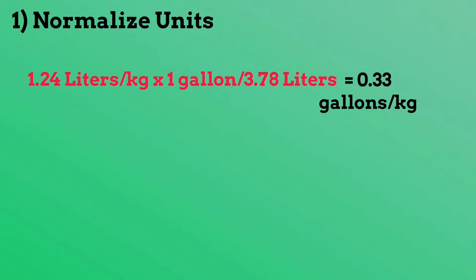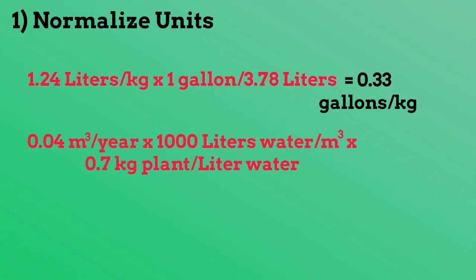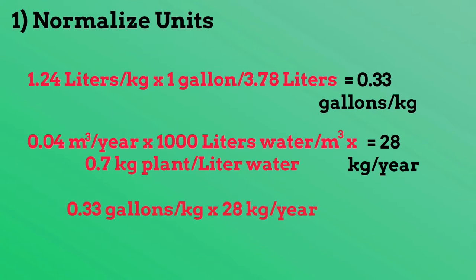Next, we will convert the volumetric growth rate of our plant to a mass growth rate. We have the plant specific gravity and we know that there are 1,000 liters per cubic meter. Using this information, we can convert the growth rate of 0.04 cubic meters per year to 28 kilograms of growth per year. Now that we have the annual mass growth rate for one plant, we can multiply this by the uptake rate of contamination per kilogram of plant.